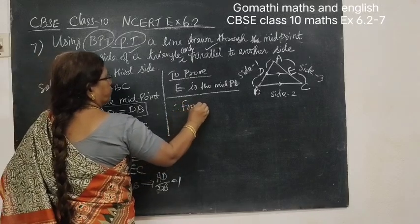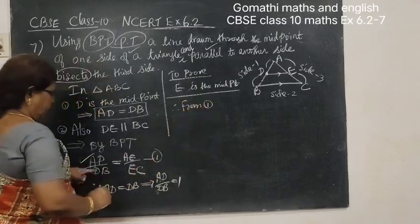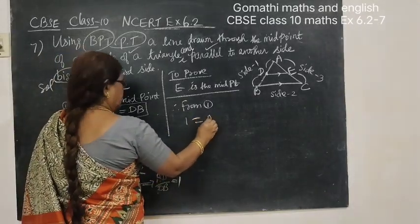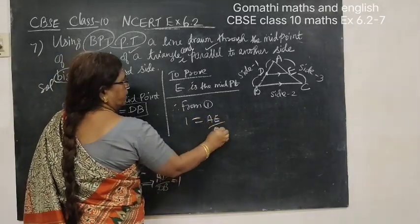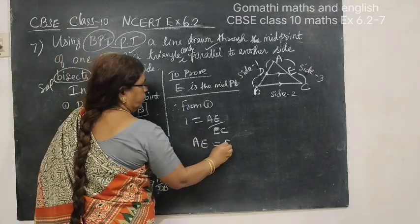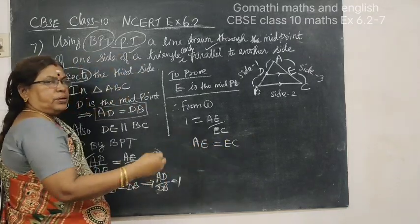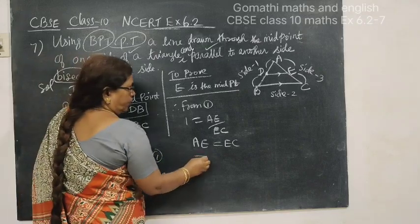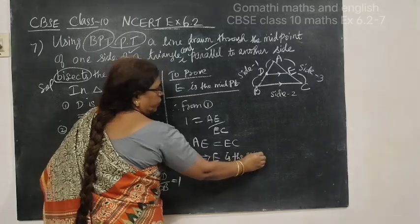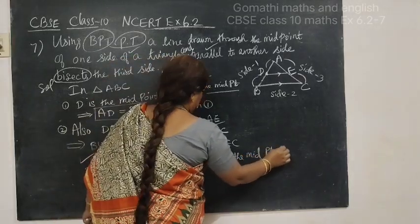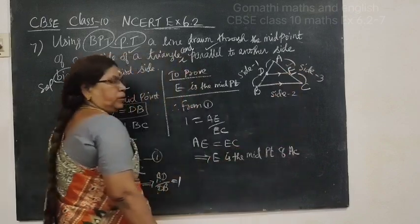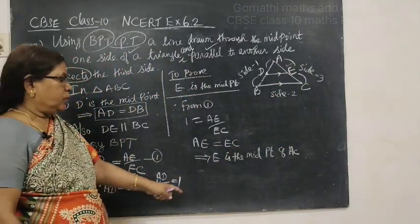From this, 1 equals AE by EC. Cross multiplying, AE equals EC. Therefore E is the midpoint of AC. Hence the result is proved.